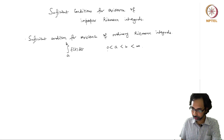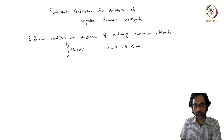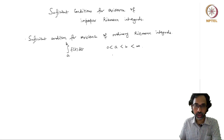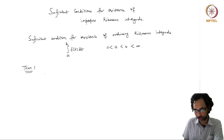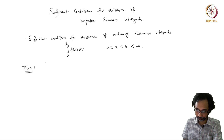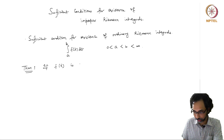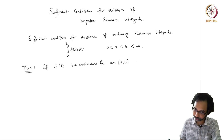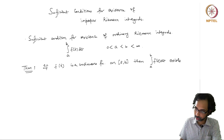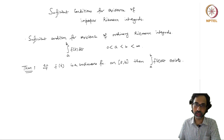By an ordinary Riemann integral, I mean an integral of the form ∫ₐᵇ f(t)dt where a and b are finite values. I am taking a to be positive since all our computations will be on the positive real line. The theorem giving the sufficient condition is: if f(t) is a continuous function on the closed interval [a, b], then the integral ∫ₐᵇ f(t)dt exists, meaning it is a finite value.